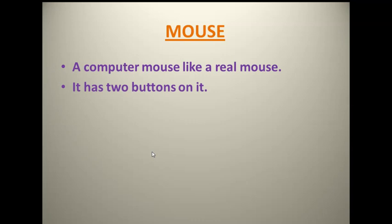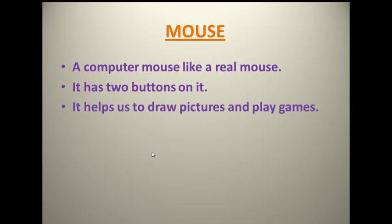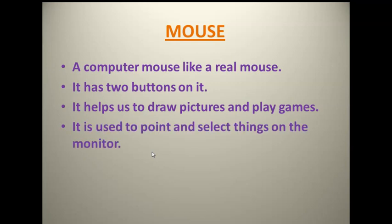The mouse has two buttons. It helps us to draw pictures and play games. With the help of the mouse pointer we can point and select things on the monitor. So I hope you have understood all four main parts of a computer: monitor, CPU (Central Processing Unit), keyboard, and mouse.